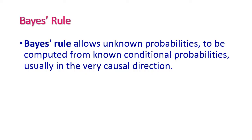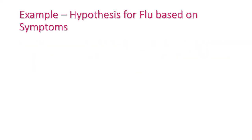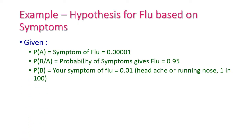Bayes rule allows unknown probabilities to be computed from known conditional probabilities, which is usually in the causal direction. Now let us see one example: the hypothesis for flu based on symptoms. You are having symptoms like running nose and body pain and have a doubt of flu, which is a kind of fever. So you Google the symptoms and find three things: P(A) — symptom of flu — is 0.00001; P(B | A) — probability of symptoms given flu — is 0.95 (95%); and P(B) — your symptoms — is 0.01 (1 in 100 people).